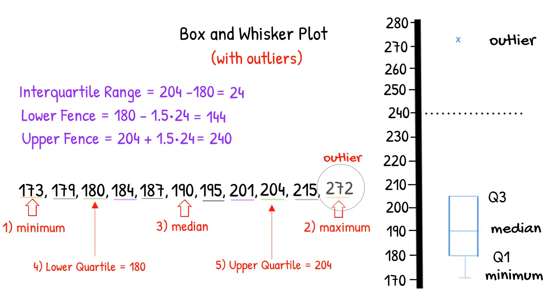If we had additional outliers, each would have their own marking. Now, we can create the end point of our second whisker with the highest value within our fence. And this is what our final box and whisker will look like.